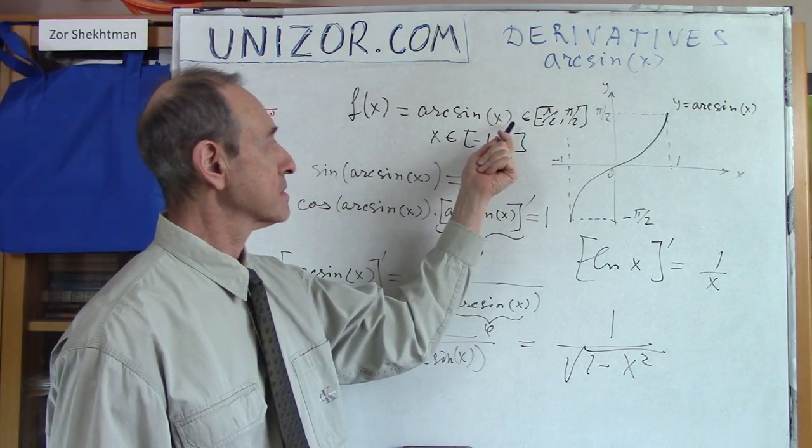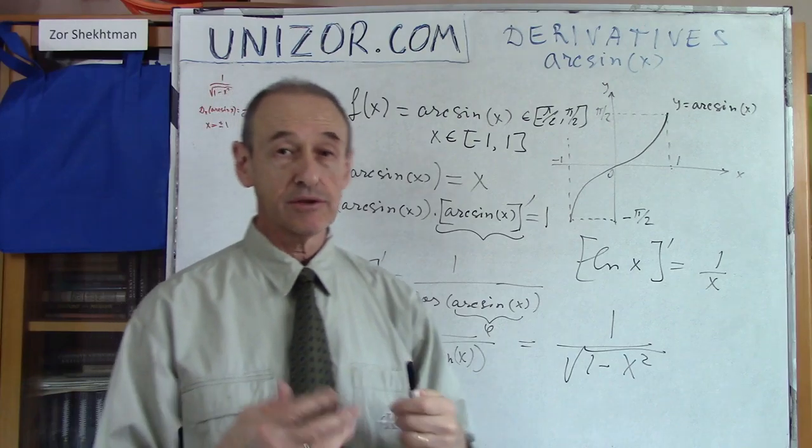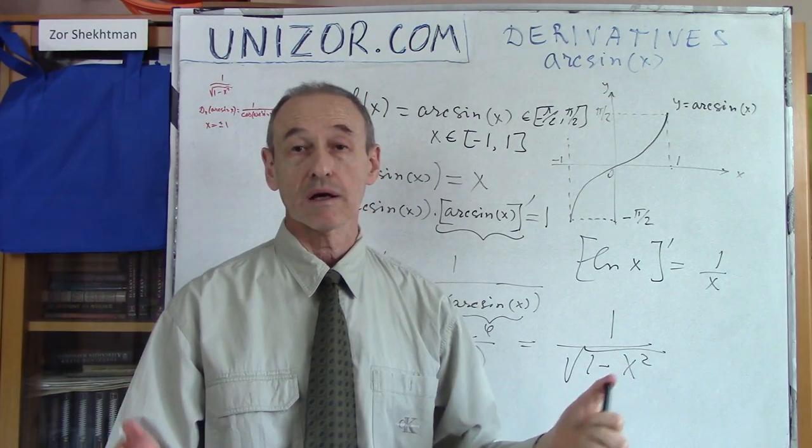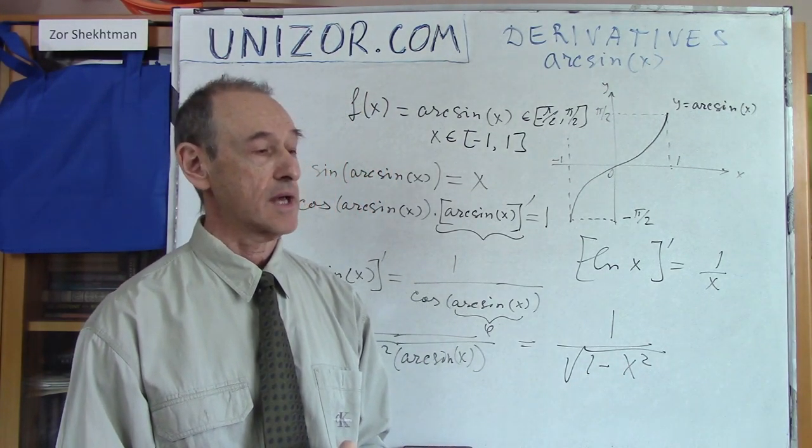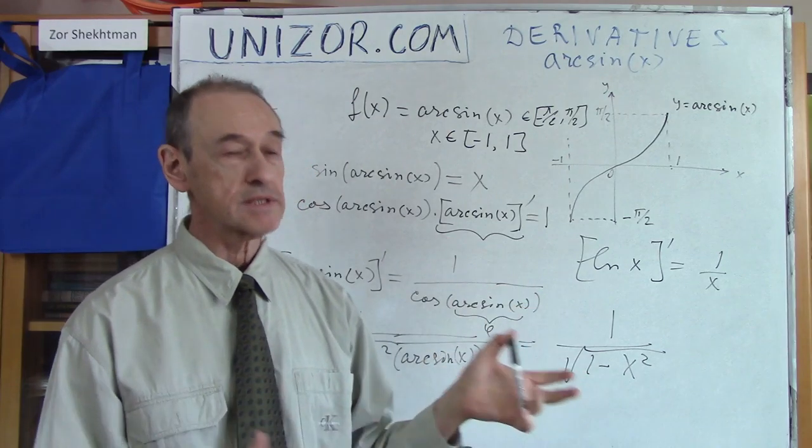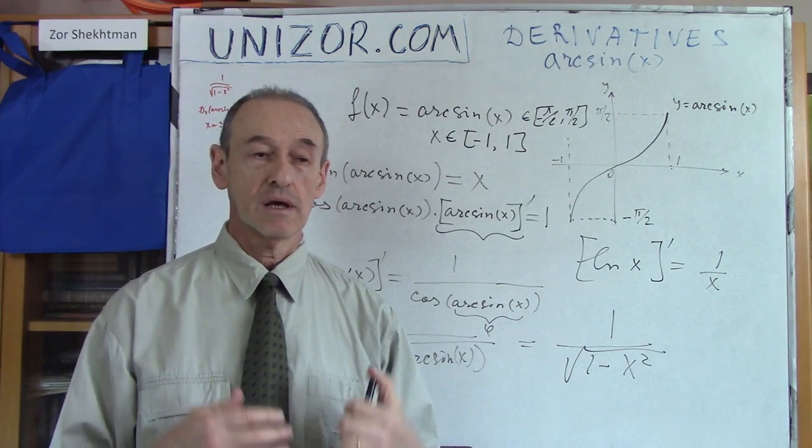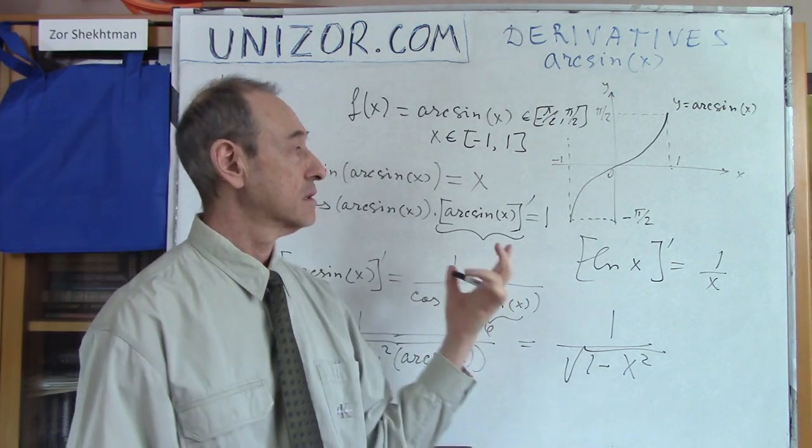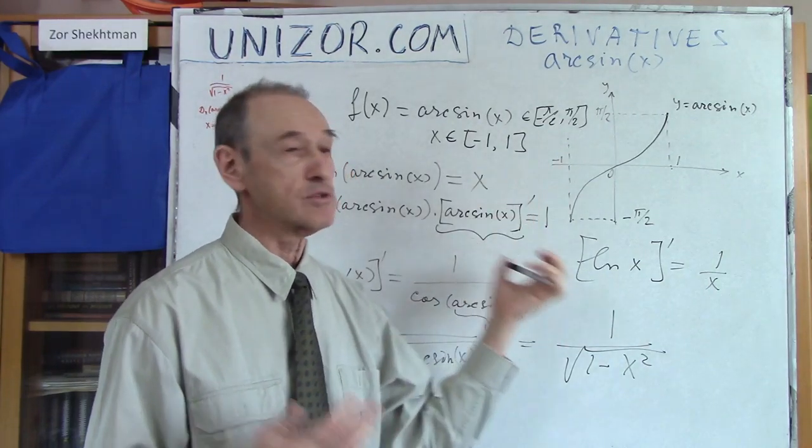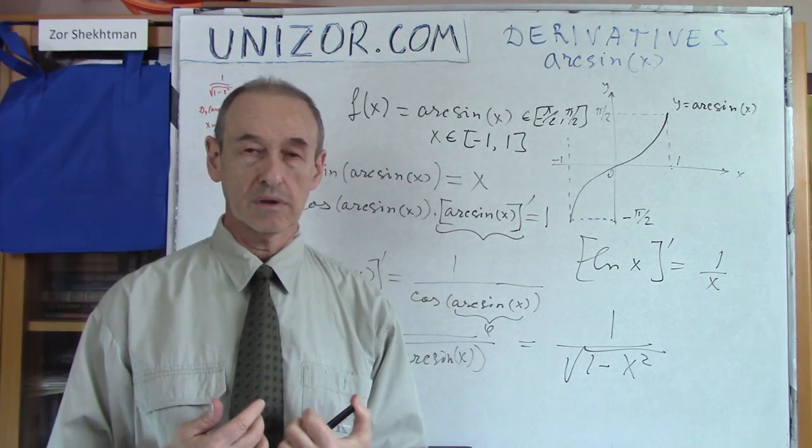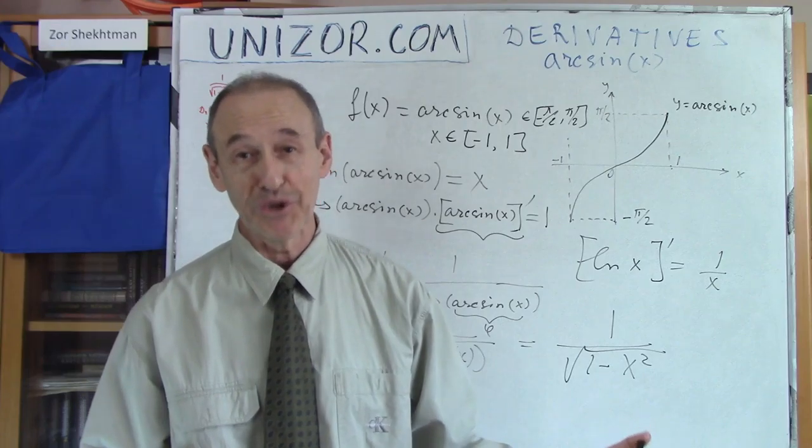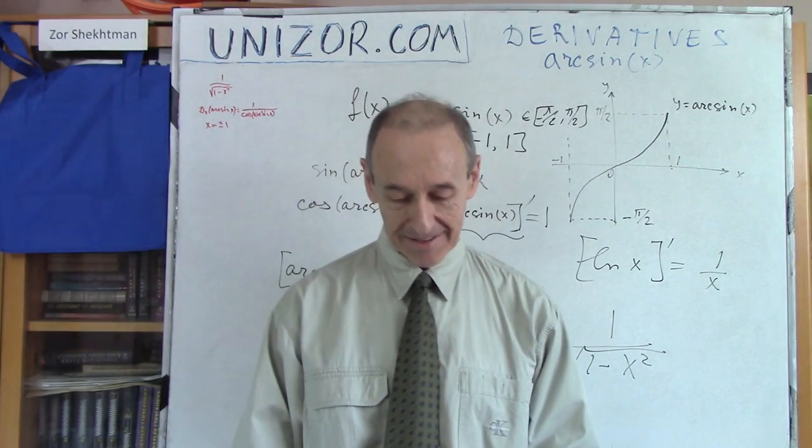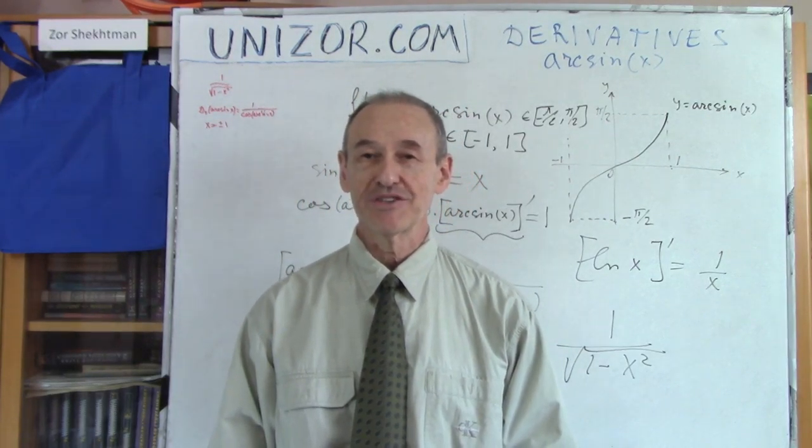Sometimes functions like this, and you can obviously do it yourself for arccosine or anything like that, sometimes this implicit differentiation is very useful. And it looks like otherwise you cannot really derive this formula. At least not easily. At least I don't know how. Alright, that's it for today. Thank you very much and good luck.